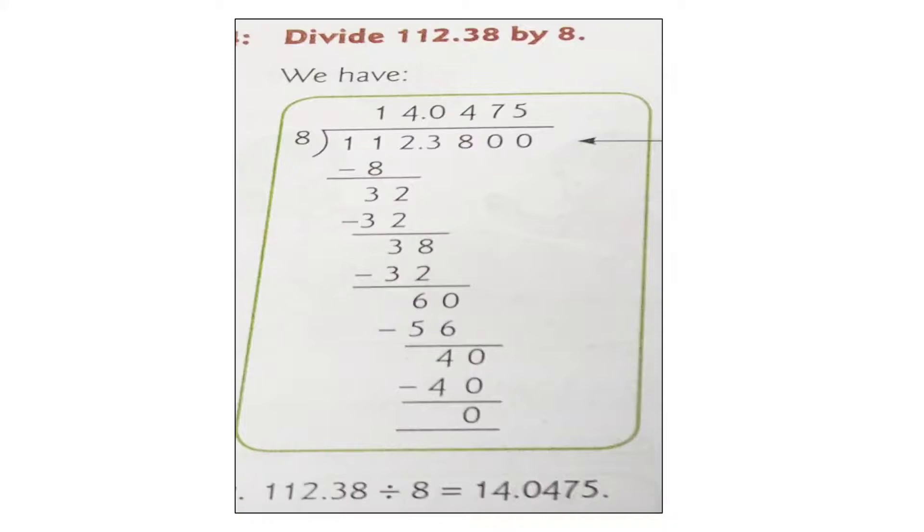Now, you will put 0 in the quotient. 8 fours are 32. 38 minus 32 is 6. Now you have to put 0 and bring down 0. 8 sevens are 56.